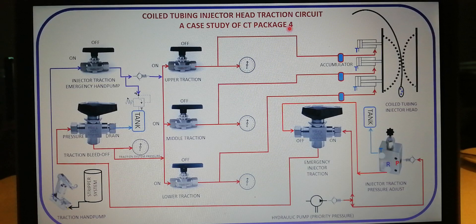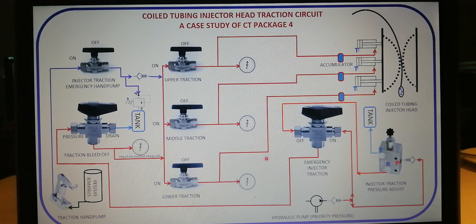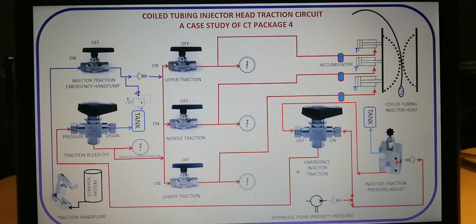But, irrespective of CT make, almost all traction circuits have similar features. Those lines in red are pressure lines from the hydraulic pump. Those in purple are pressure lines from the manual hydraulic pump. Those in black are suction lines to the pump. And finally, those in blue are return lines back to the tank.